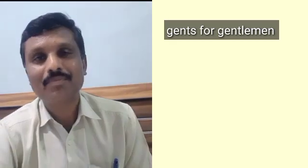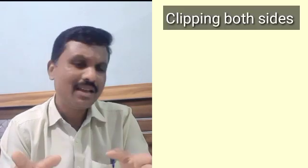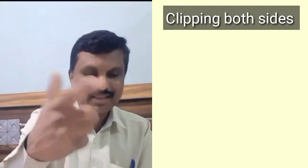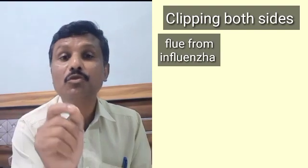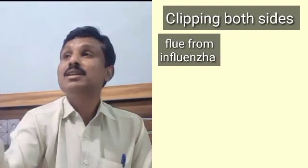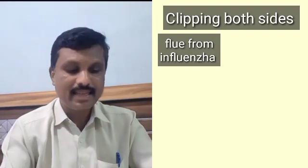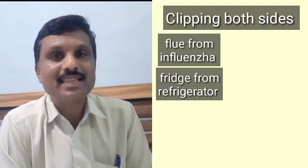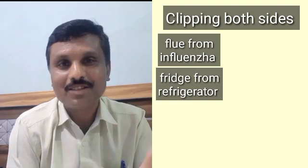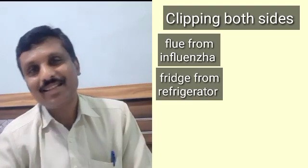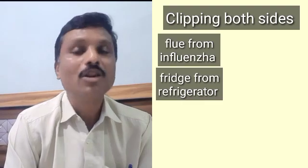There is another process of clipping — clipping from both sides. Remove from the beginning, remove from the end, and keep the word in between. The best example is 'influenza,' which is clipped to 'flu.' Also, 'refrigerator' in today's world is called 'fridge' — 're' is clipped from the front and '-drator' from the end. This is the process of clipping. Hope you have understood the difference between back formation and clipping.